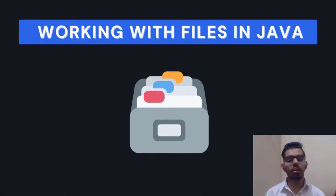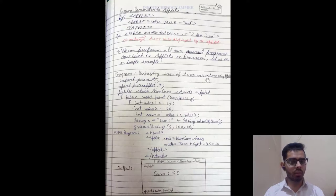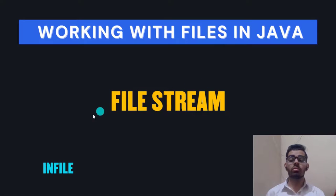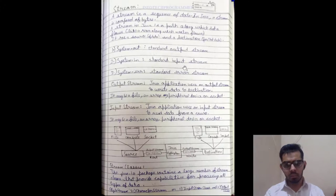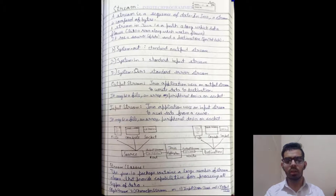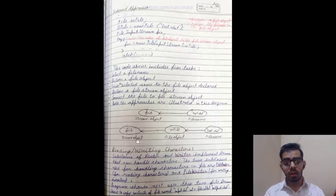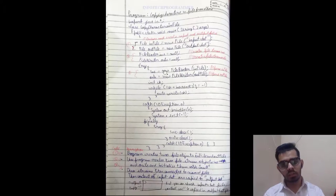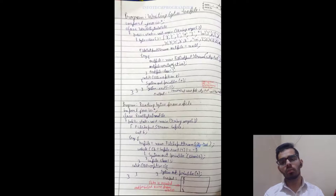After applets, we have working with files in Java — file handling. I've provided notes on input/output with files, what a file stream is, what System.out and System.in are, stream classes, file objects, reading and writing characters to files, working with file objects and bytes. You can also see programs there to run and understand file handling in Java.